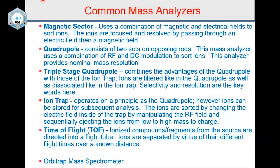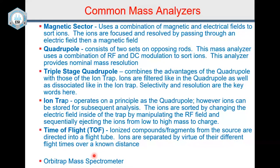Different types of mass analyzers include: magnetic sector, quadrupole, triple stage quadrupole, ion trap, time-of-flight, and Orbitrap. The Orbitrap was introduced about 20 years ago and has even led to a Nobel Prize — it is a truly amazing instrument. We have several in India now; it is very expensive — a few hundred thousand dollars — but it can work for small molecules in LC-MS mode, organic molecules, proteins, and peptides. If you have one, you can do almost anything in mass spectrometry today.